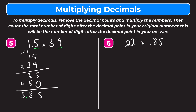Let's try number 6. We have 22 hundredths times 85 hundredths. So let's rewrite this without the decimal points: 22 times 85. 5 times 2 is 10, put the 0, carry the 1. 5 times 2 is 10 again, plus 1 is 11. Moving one place over with the 8, so we put a 0. 8 times 2 is 16, carry the 1. 8 times 2 is 16, plus 1 is 17.